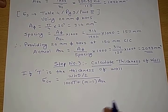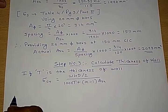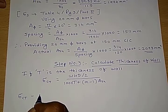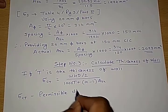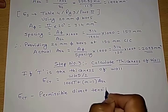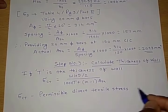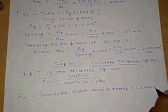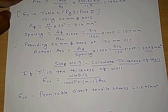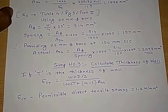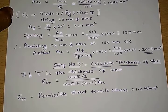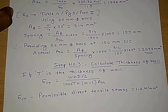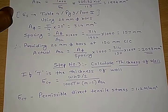Here sigma_ct is the permissible direct tensile stress. For M20 grade concrete, sigma_ct equals 1.2 N/mm². The modular ratio can be taken from Annexure B of IS456, and for M20 grade concrete it is 13.33.